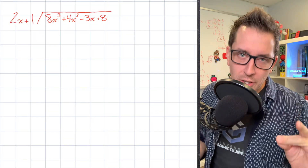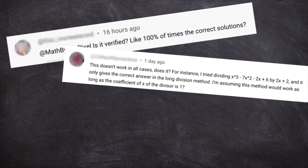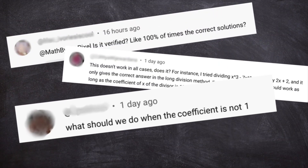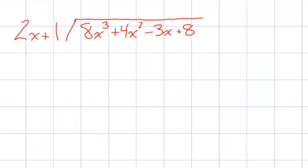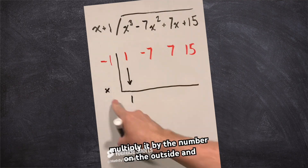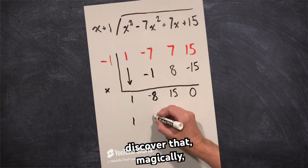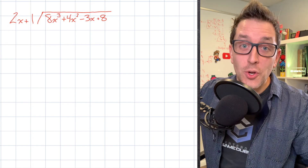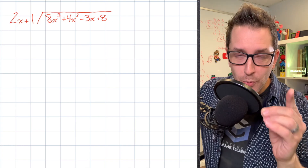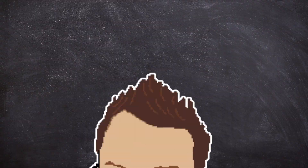Synthetic division is starting to make sense, but if you're anything like the people in the comments, you might be wondering if synthetic division works on a divisor like this one where the leading coefficient is not equal to 1. As it turns out, using synthetic division normally will result in an incorrect quotient. So in this video, I'm going to show you exactly what you need to do to avoid that mistake.